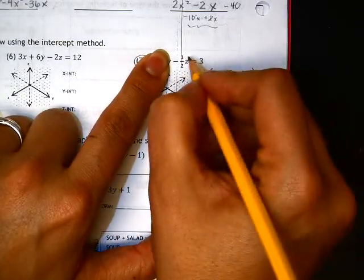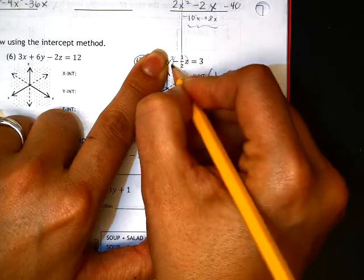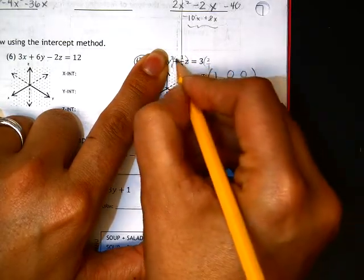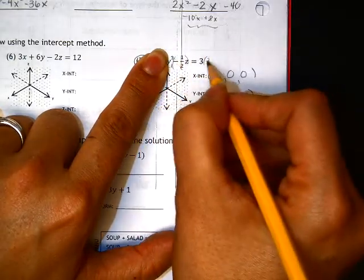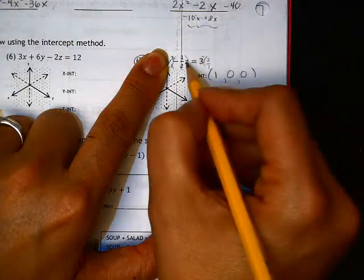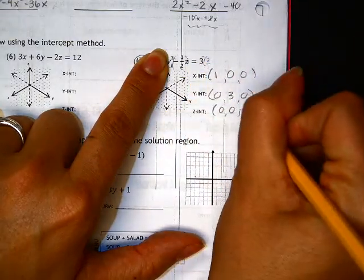To undo the one-half, I would multiply by 2 over 1. Because then the 2's cancel and the 1's cancel. And I do want to multiply by negative 2 over 1. So z is equal to negative 6.